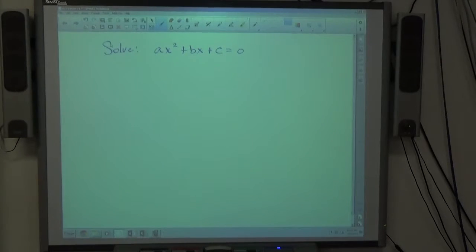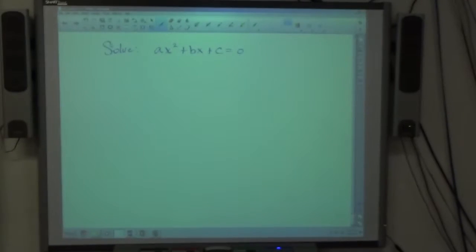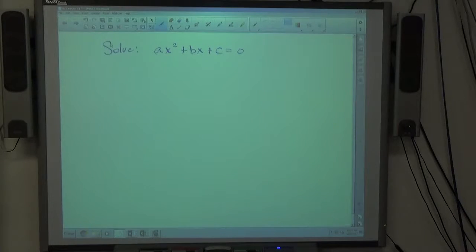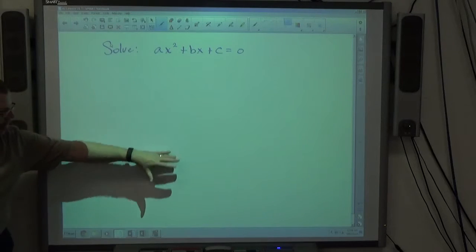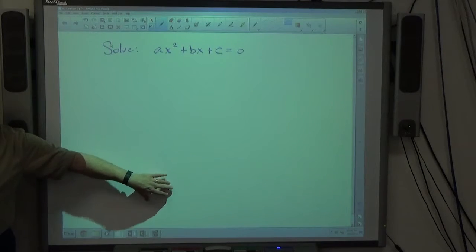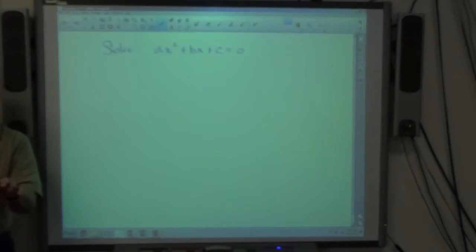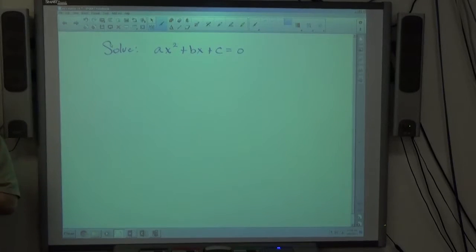ax squared plus bx plus c equals zero has that quadratic structure. Something x squared plus something x plus something equals zero. Now what we're going to do is create a formula. So anytime a problem looks like that, our formula can be used to get the answer. Instead of having to go through the whole completing the square process every single time, it's just a formula. We stick all the numbers into the formula and work it out and we get our answer. It's a wonderful thing, a wonderful invention.